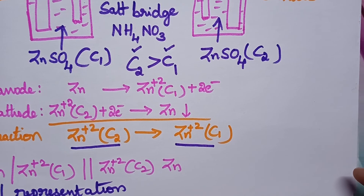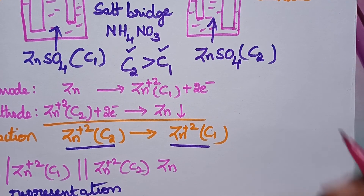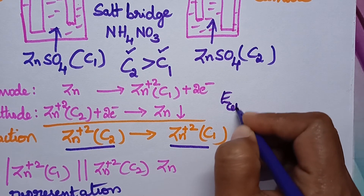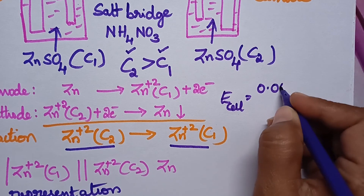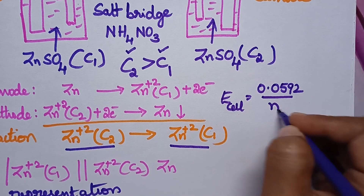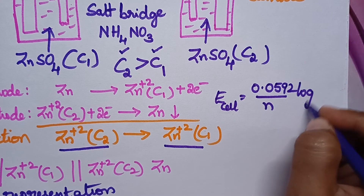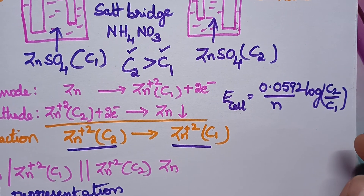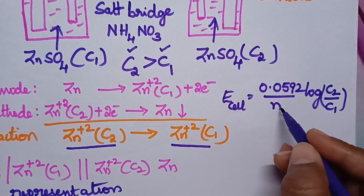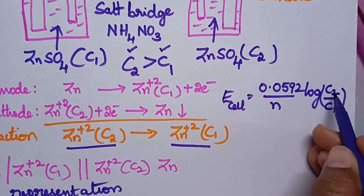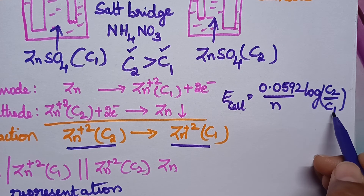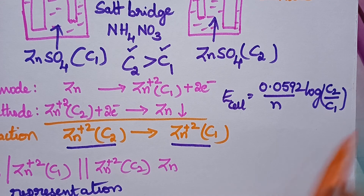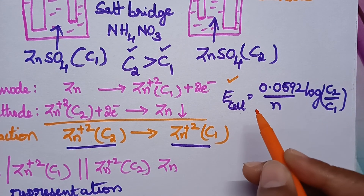The EMF of this cell can be calculated by using the formula: E_cell = (0.0592 / N) × log(C2 / C1). Here N represents the number of electrons lost or gained, C2 is the higher concentrated solution, and C1 is the concentration of the lower concentrated solution. By using this formula, it is possible to calculate the EMF of this cell.